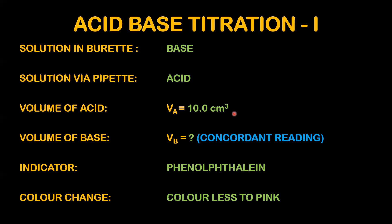The third thing is the volume of acid. This is very simple. The volume of acid, which you are aware of, means that the acid is in the pipette, and the volume of acid will be known — it will be 10.0 cm³.